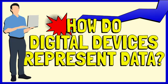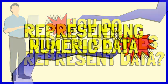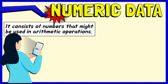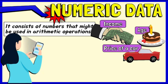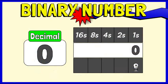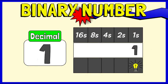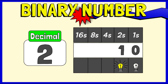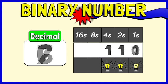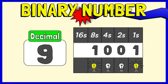In this video, we are going to learn how computers represent numbers, letters, images, and sound. Let's start with numeric data. Numeric data consists of numbers that might be used in arithmetic operations — for example, your monthly income, your age, and the price of your car are all numeric data. Digital devices can represent numeric data using the binary number system, also called Base 2. The binary number system has only two digits: 0 and 1. After you reach 1, you run out of digits. To get to the next number, you have to use 0 as a placeholder and the 1 to indicate one group of 2s. So the number 2 is represented in binary as 10. The binary number system allows digital devices to represent virtually any number simply by using 0s and 1s, and digital devices can then perform calculations using these numbers.